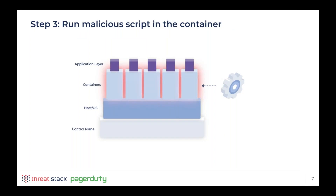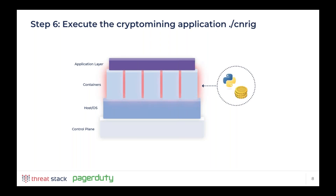Once access to a shell within the container was gained, the next step was to start running a script to carry out the rest of the attack. The shell was spawned — for example, a Python shell — which allows entering Python code directly and executing it, giving tremendous power within the system. By scripting everything out and executing a script, the attacker can do everything in seconds, and that's exactly how this particular attack occurred.